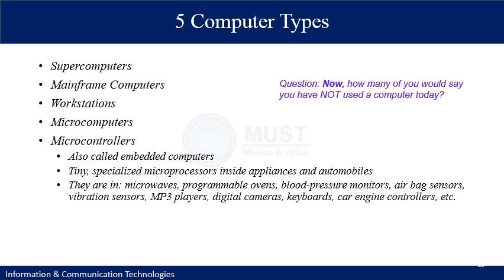Moving back to types of computers: we have discussed supercomputers, mainframe computers, workstations, and microcomputers. There is another type called microcontrollers, often called embedded computers. These are very small and specialized microprocessors which reside inside appliances and automobiles. For example, you may find a simple computer in a washing machine or microwave oven.